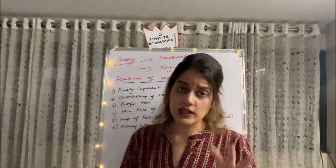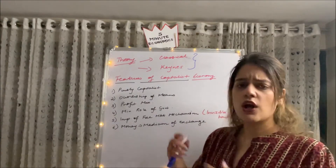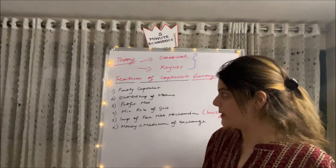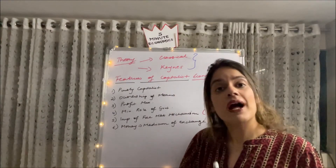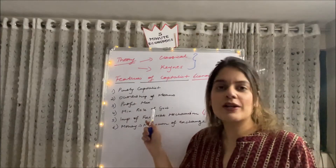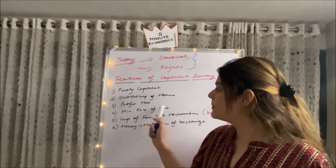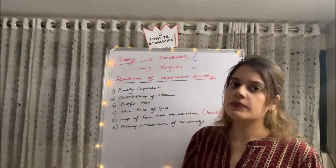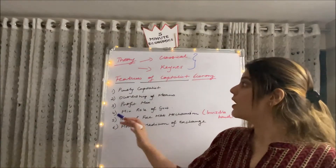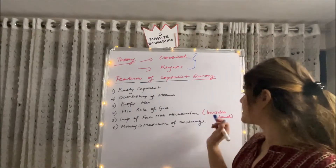The classical economists operated around a capitalist economy. A capitalist economy is a laissez-faire economy — it functions on its own. A major feature is that private individuals are the kingpins; they set up everything and do all the work. Because of that, profit maximization is the major goal. The role of government or state is minimum, and the free market mechanism is of great importance.